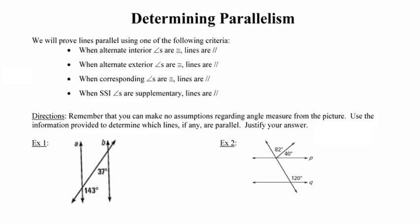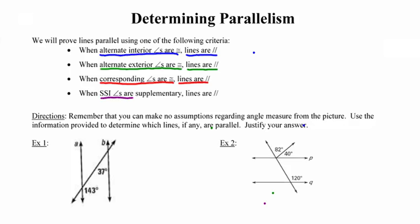When alternate interior angles are congruent, the result is that lines are parallel. When alternate exterior angles are congruent, the result is that lines are parallel. When corresponding angles are congruent, the result is that lines are parallel. And lastly, when same-side interior angles are supplementary, the lines are parallel.